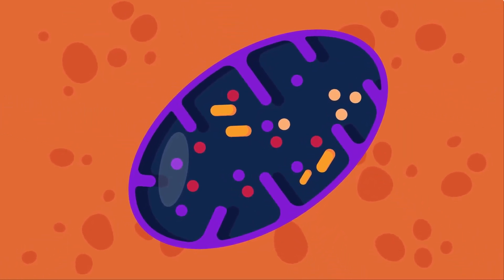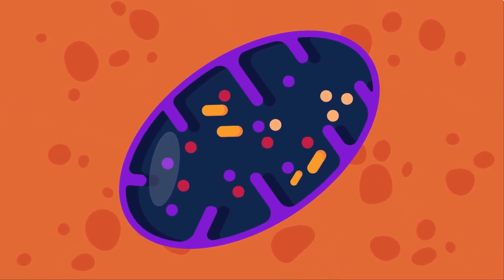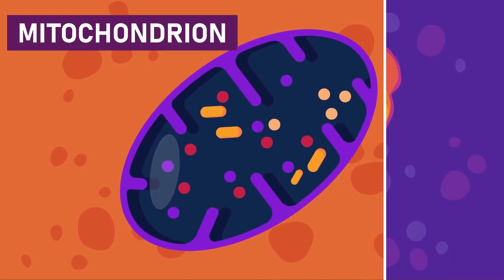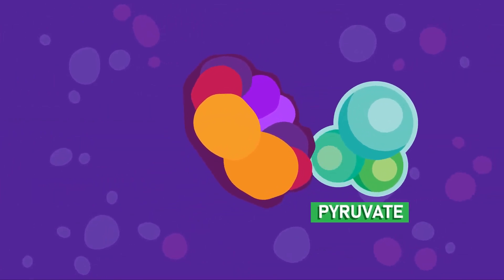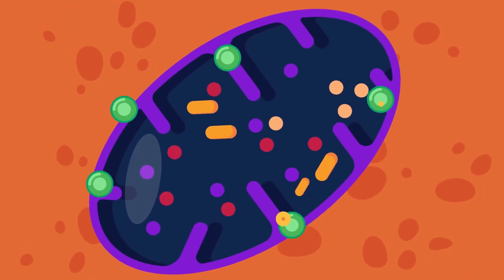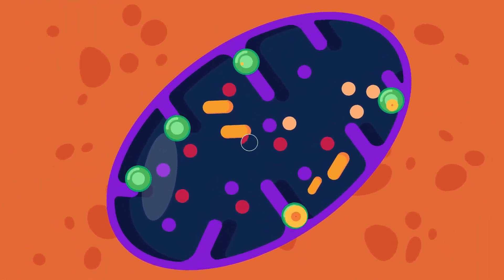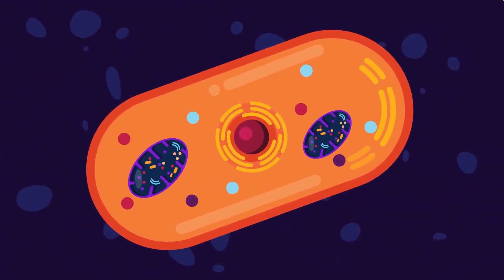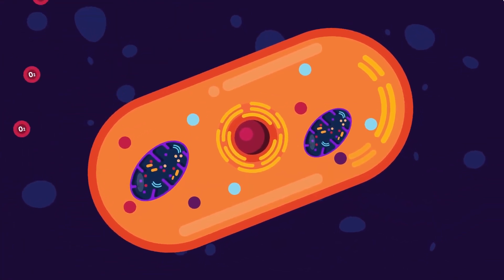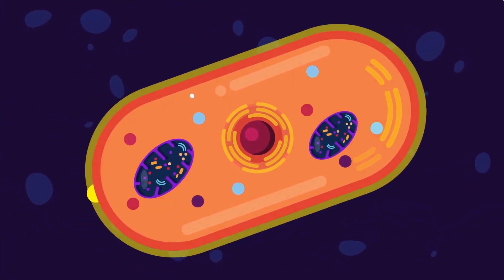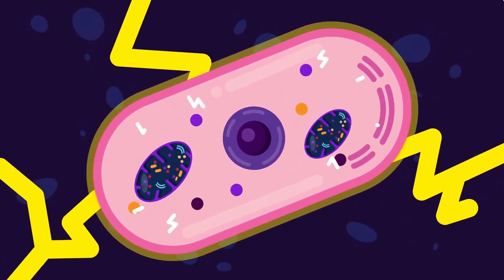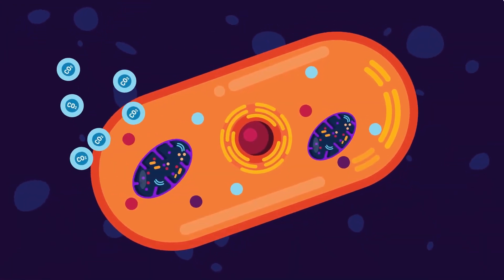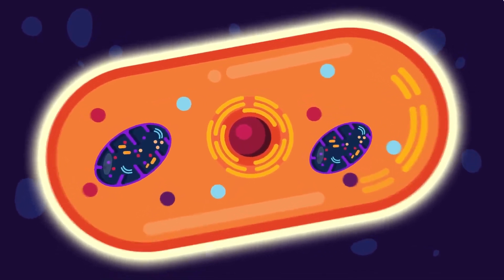The key organelle inside cells for aerobic respiration is the mitochondria, where the glucose molecule from the food goes through a multi-step process such as glycolysis, Krebs cycle, and electron transport chain. At the end of this multi-step process, one molecule of glucose, with the help of six molecules of oxygen, can produce 36 molecules of adenosine triphosphate (ATP), along with six carbon dioxide molecules and six water molecules.